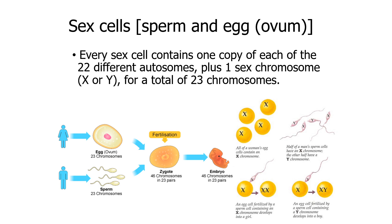Moving on now to the sex cells. Sex cells are sperm and egg — another name for an egg is an ovum, plural ova. Because sperm and egg come together in fertilization to make a single cell that eventually turns into you, each of those needs to have half as much genetic information — only 23 chromosomes. So when 23 and 23 come together, you have the normal 46. That means sex cells have one copy of each autosome plus only one sex chromosome, either an X or a Y, for a total of 23 chromosomes.